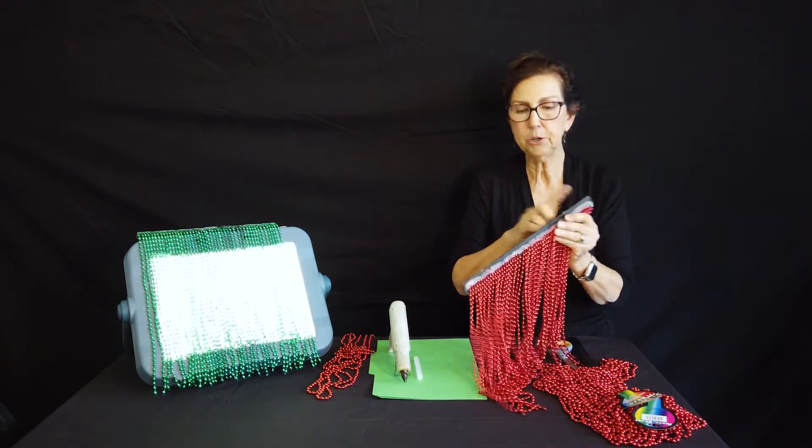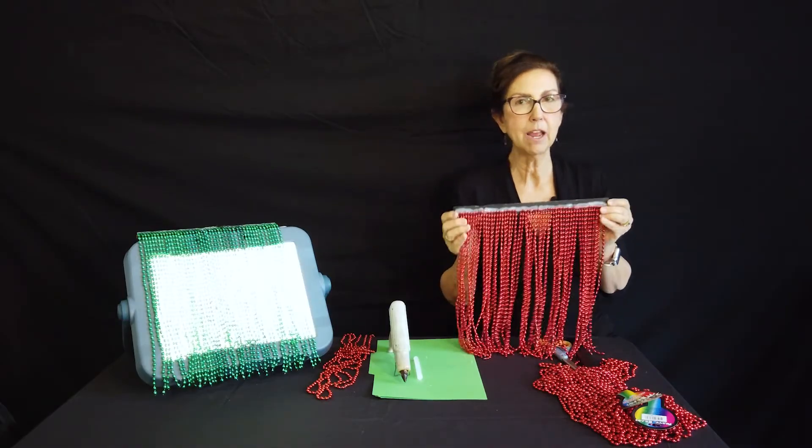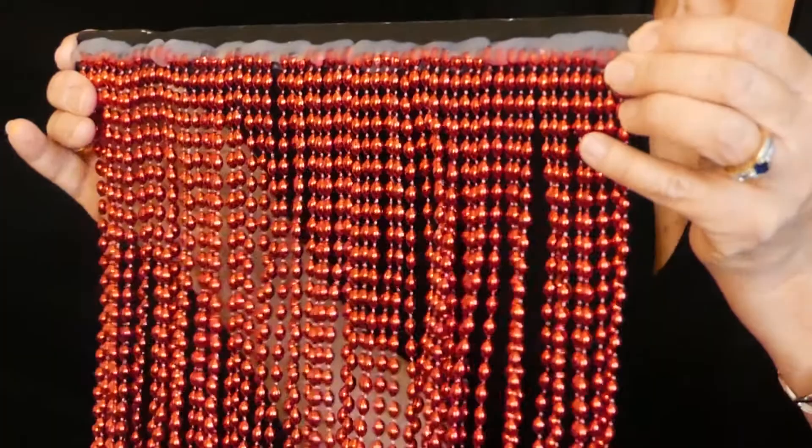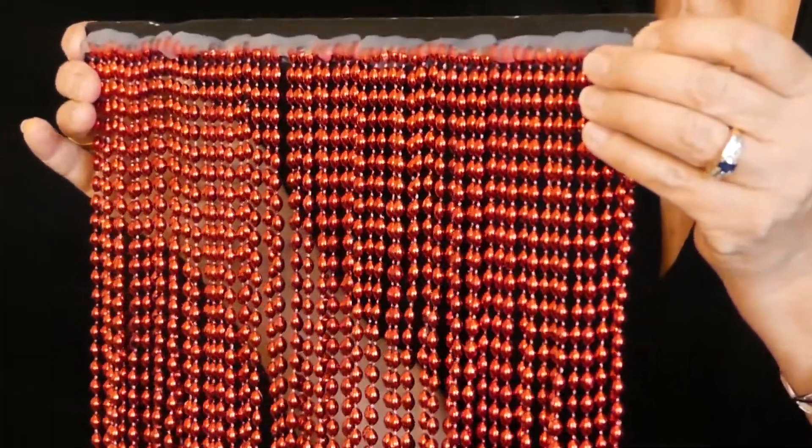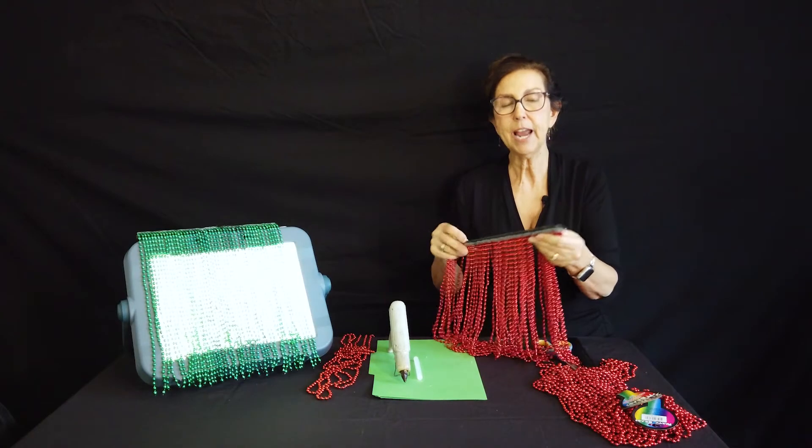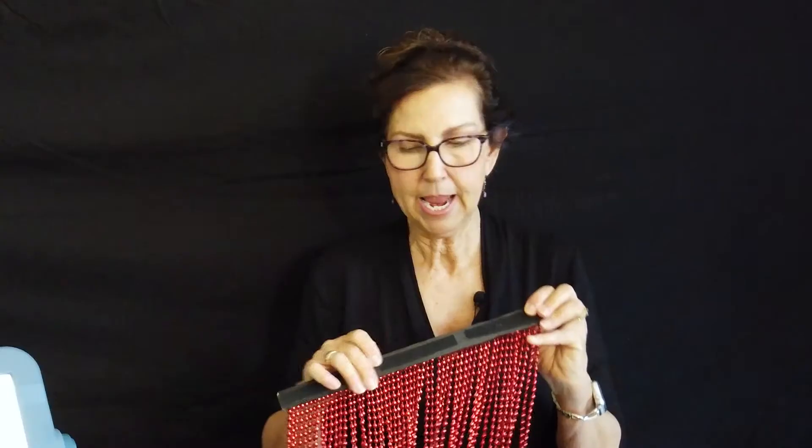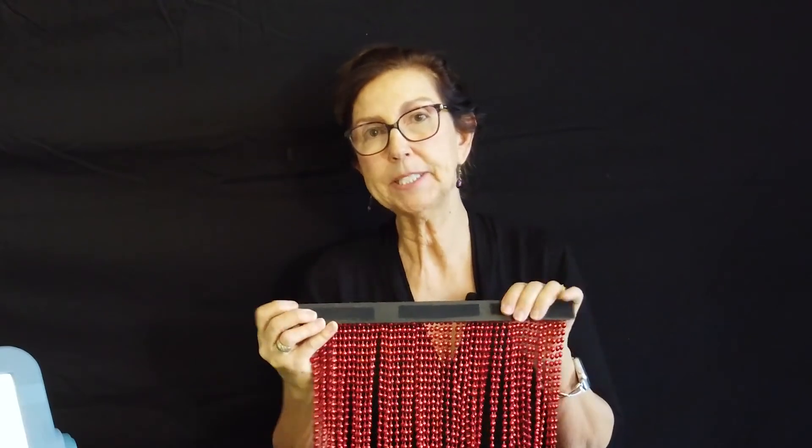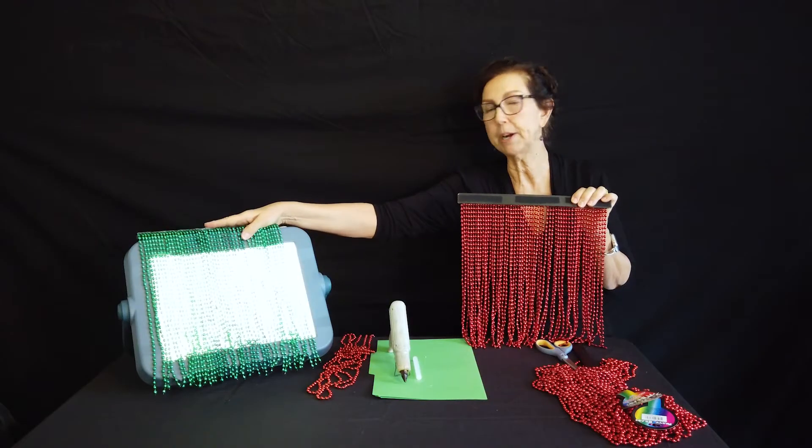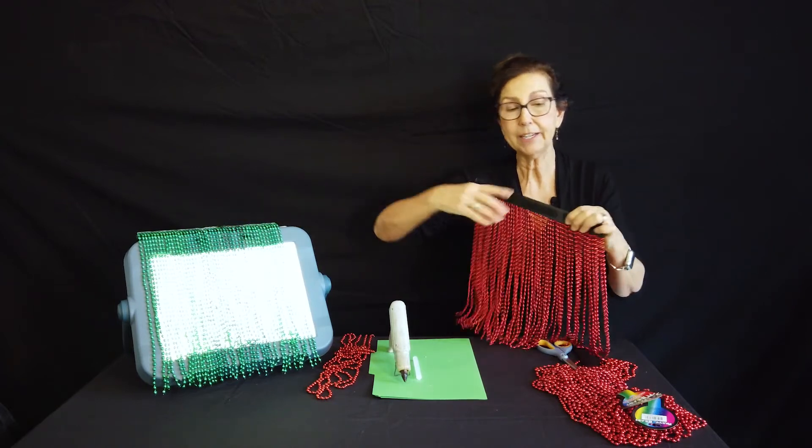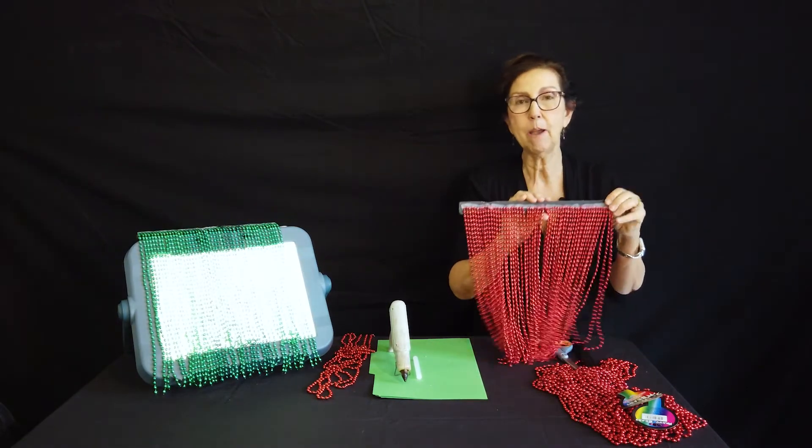Once the glue is hard and dry on the top of the entire stick and the beads are very secure on there, then I take three strips of black Velcro and I put it on the back of the stick. And then the opposite side of the Velcro I put on my light box, whichever light box I am using. And that completes the Mardi Gras bead curtain.